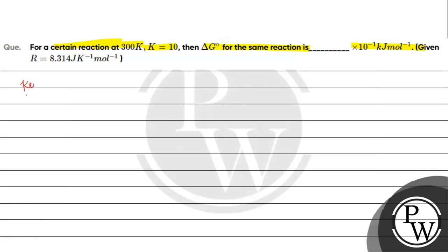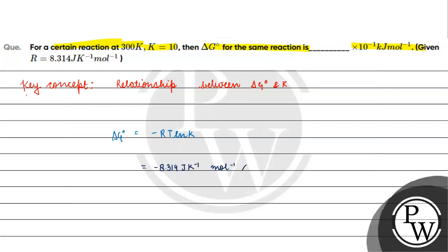The key concept for this question is the relationship between delta G naught and the equilibrium constant. Delta G naught equals minus RT ln K, which equals minus 8.314 joule per kelvin per mole, T equals 300 kelvin, times ln K, converted as 2.303 log base 10 of K.